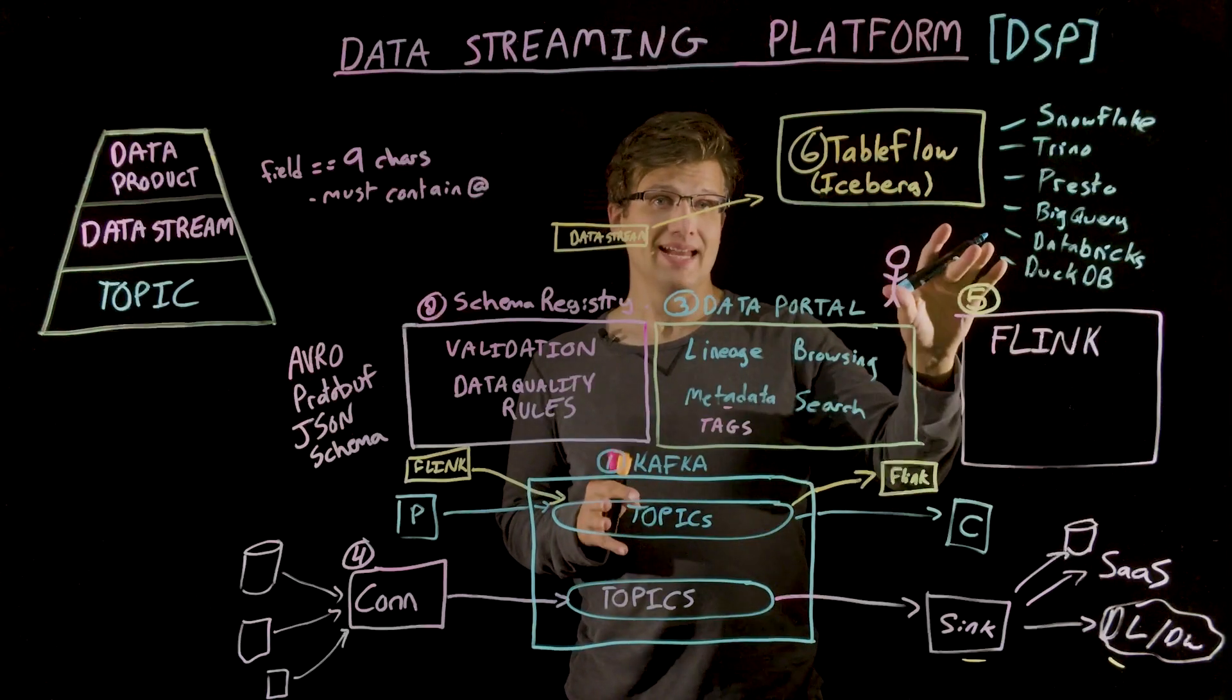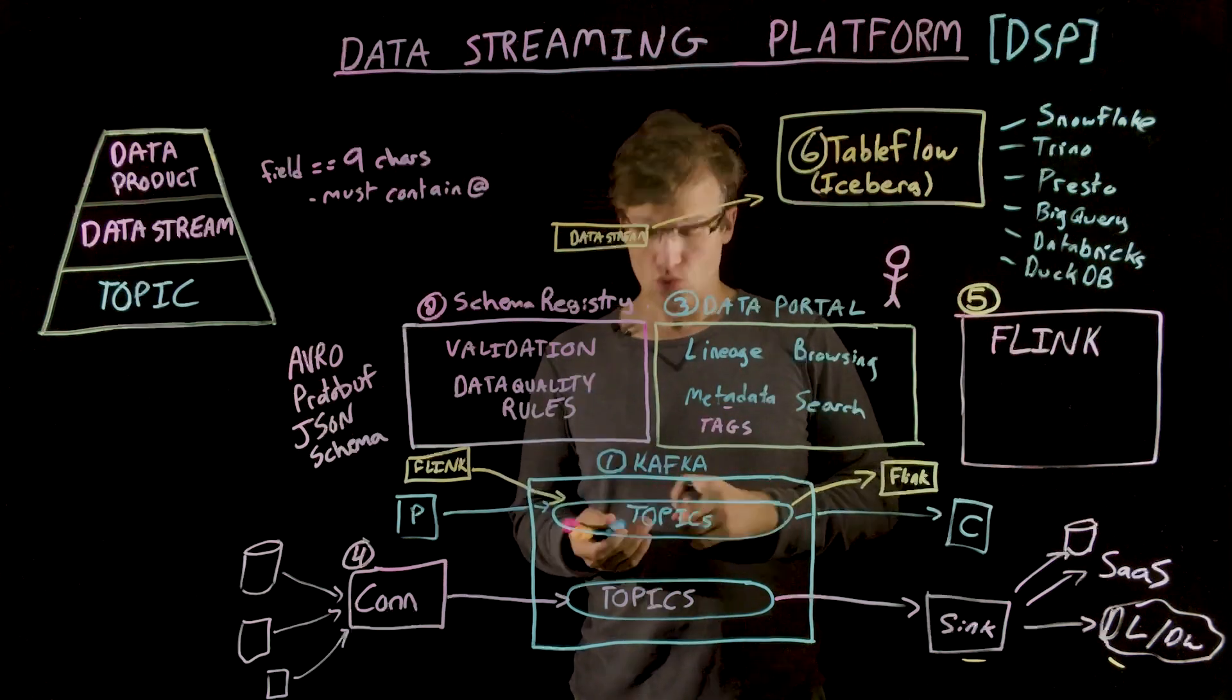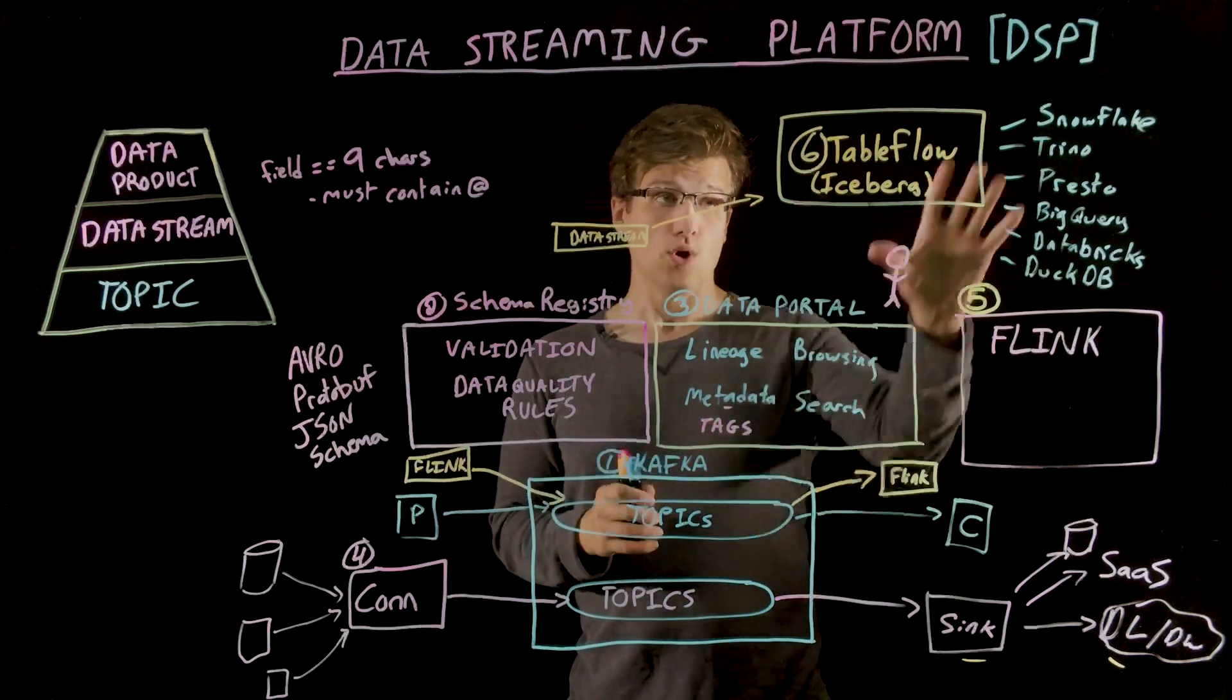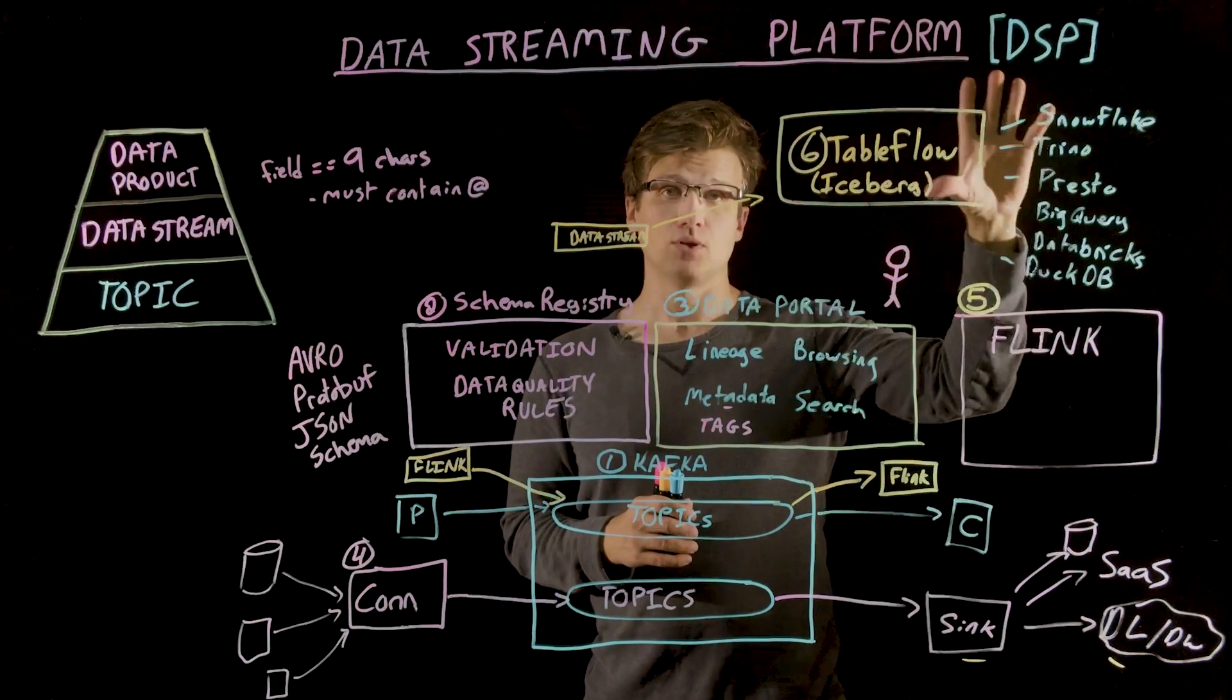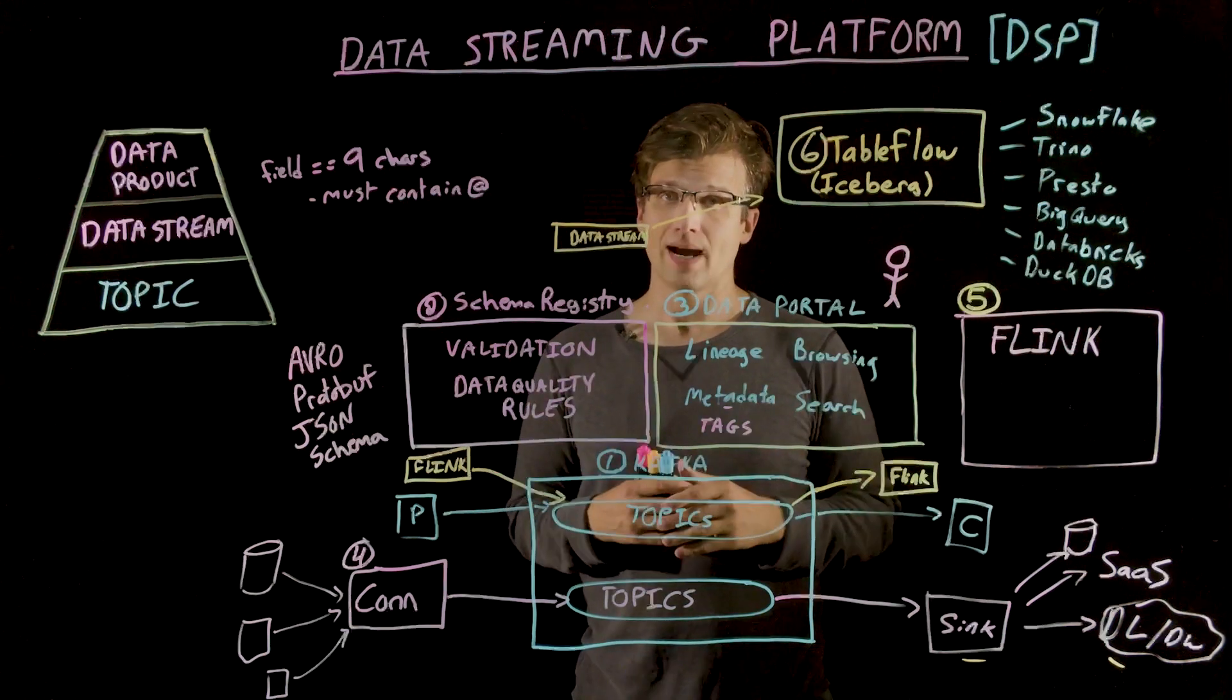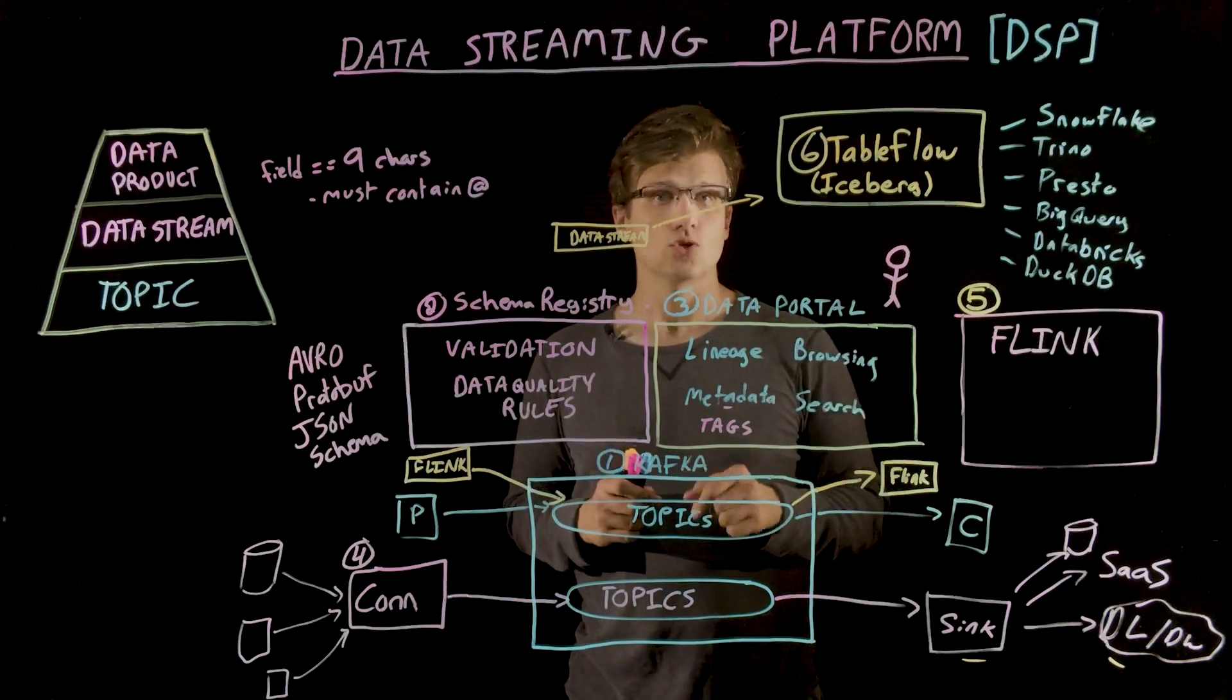This greatly expands and simplifies your access to the data. The result is that you get a choice. You can read your data as a stream via the Kafka API, or you can read it as a table via Iceberg using any compatible processing head. If you're interested in learning more about table flow and the stream table duality, consider checking out a video I've released called What is a Headless Data Architecture? You'll find the link in the description below.